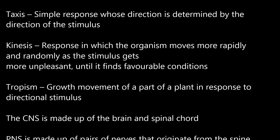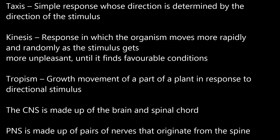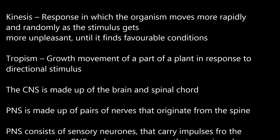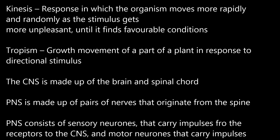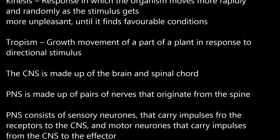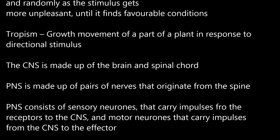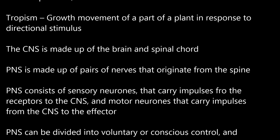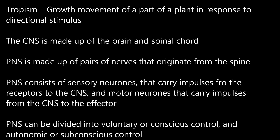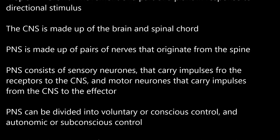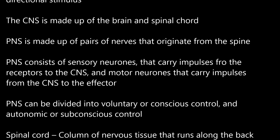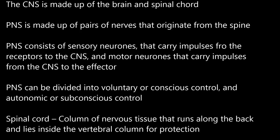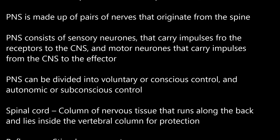The CNS is made up of the brain and spinal cord. The PNS is made up of pairs of nerves that originate from the spine. The PNS consists of sensory neurons that carry impulses from the receptors to the CNS, and motor neurons that carry impulses from the CNS to the effector. The PNS can be divided into voluntary or conscious control, and autonomic or subconscious control. The spinal cord is a column of nervous tissue that runs along the back and lies inside the vertebral column for protection.